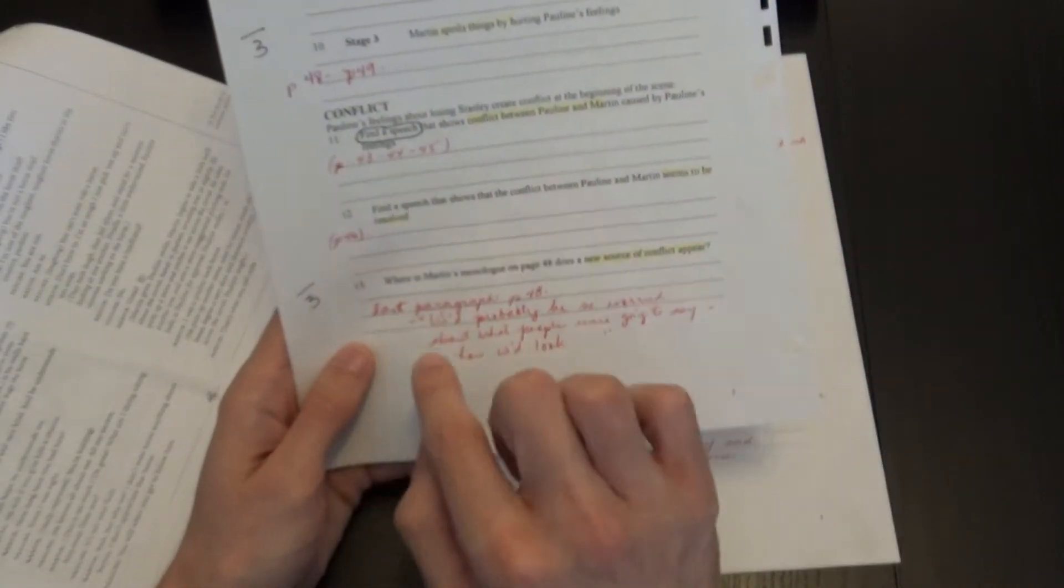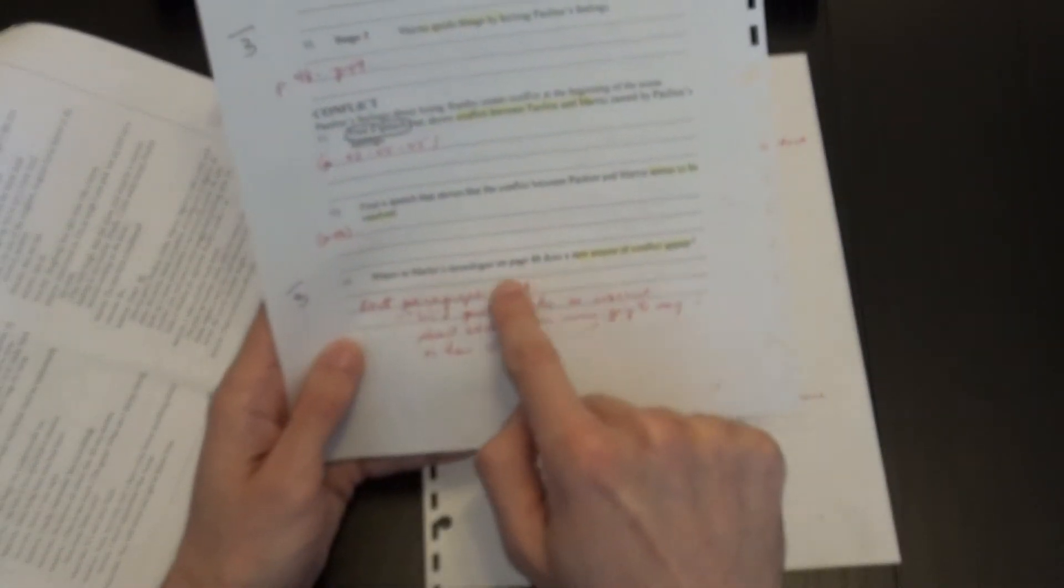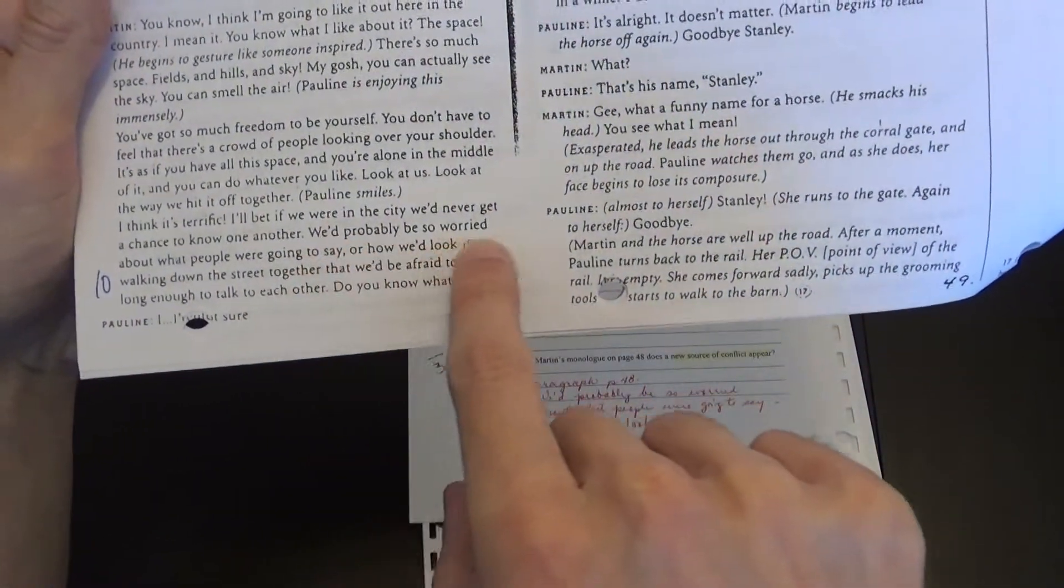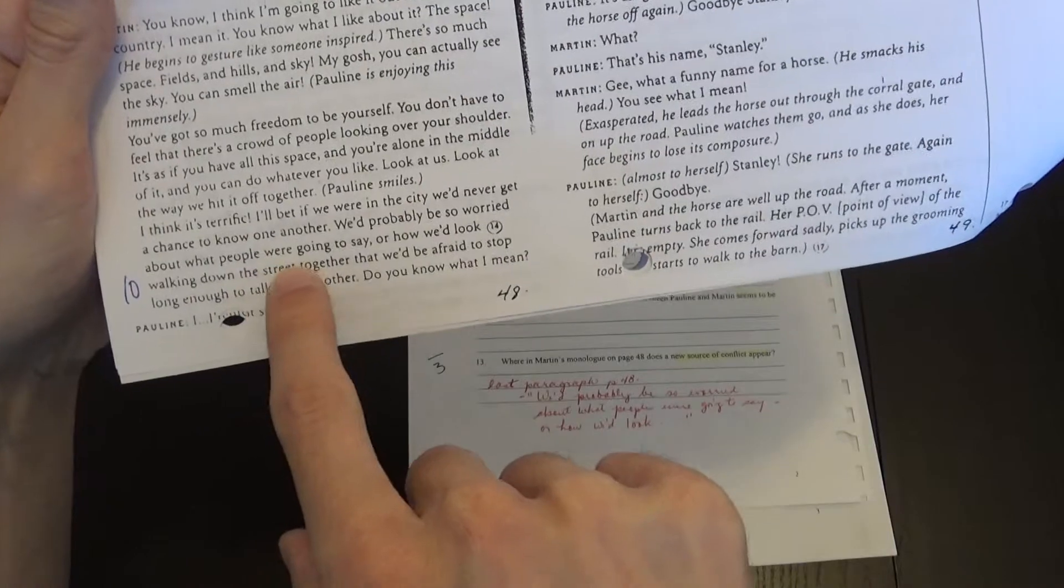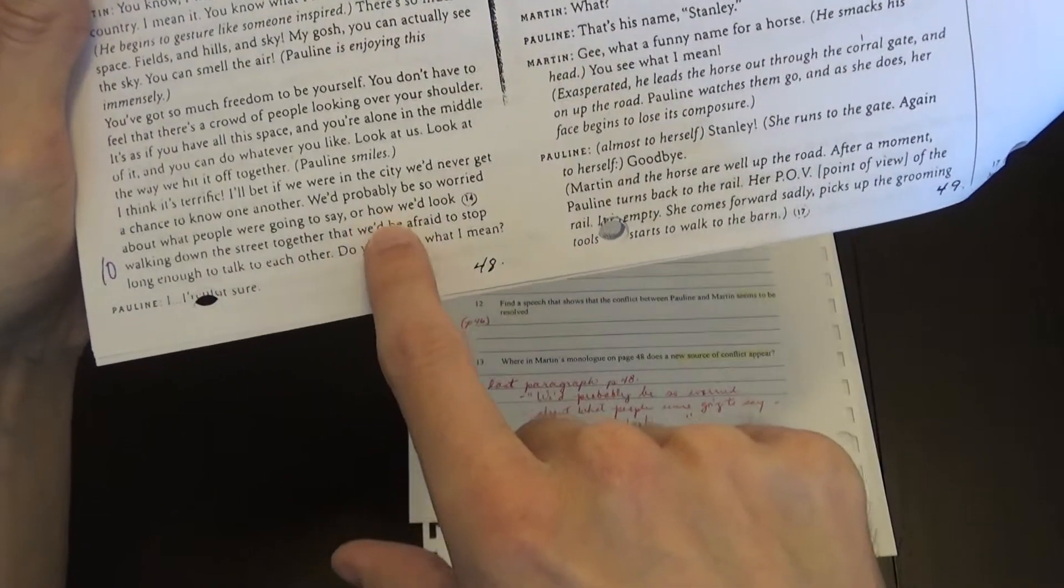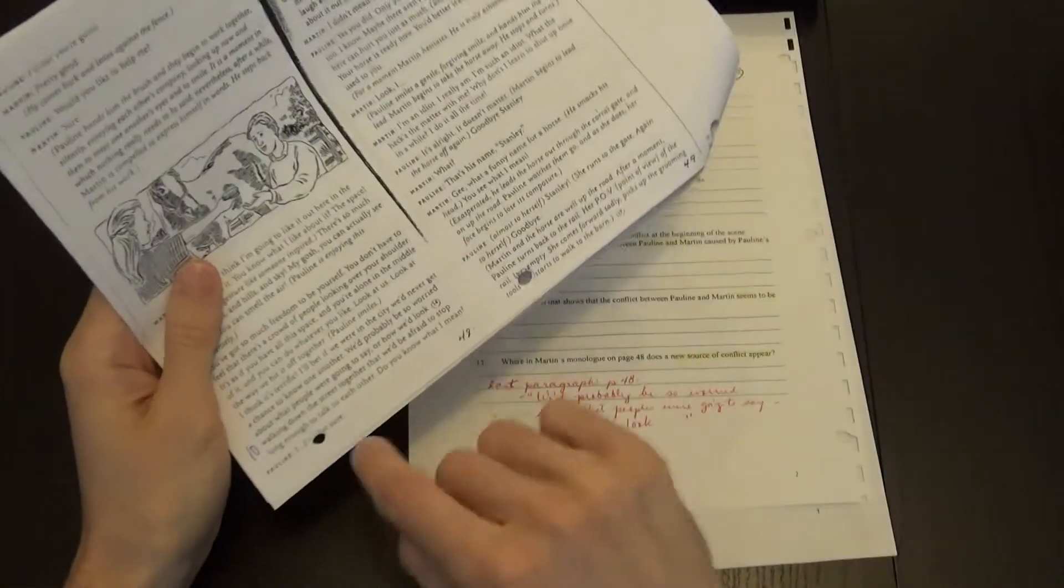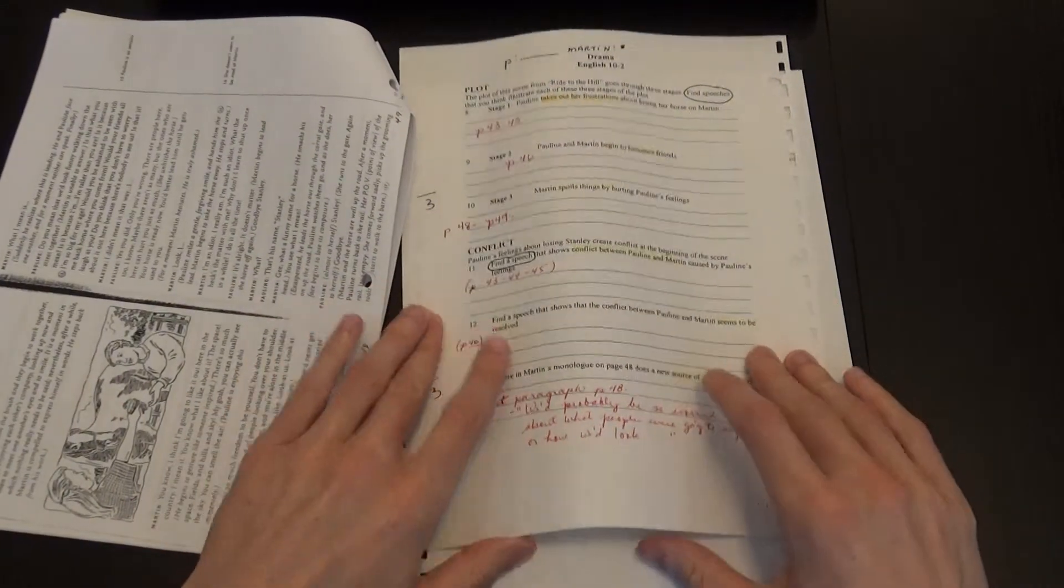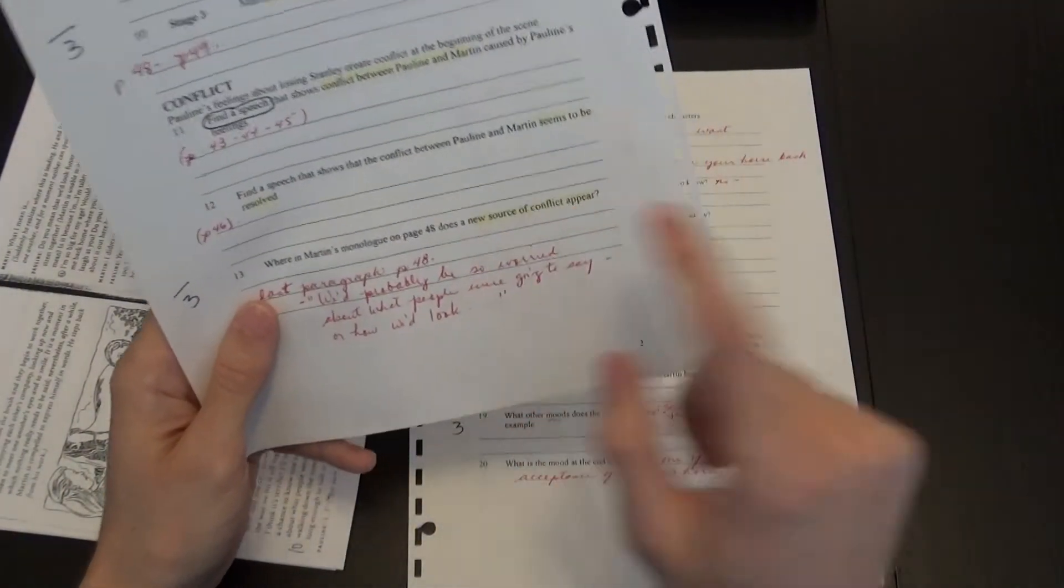And question 13, where in Martin's monologue on page 48 does a new source of conflict appear? So it's as soon as he says, 'we'd probably be so worried about what people were going to say and how we'd look.' So that's where she started to catch on where he was going with this. And that's how it started the conflict.